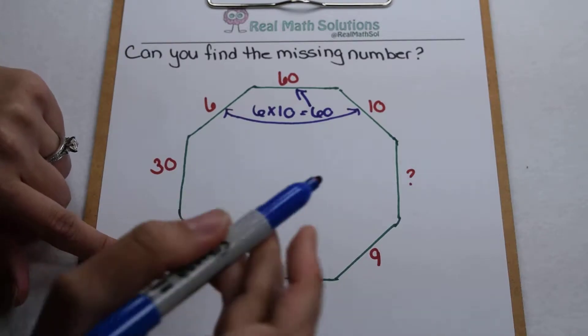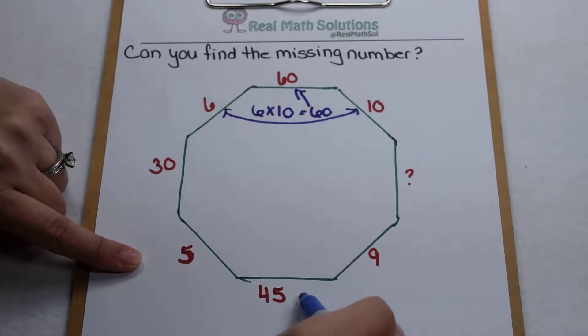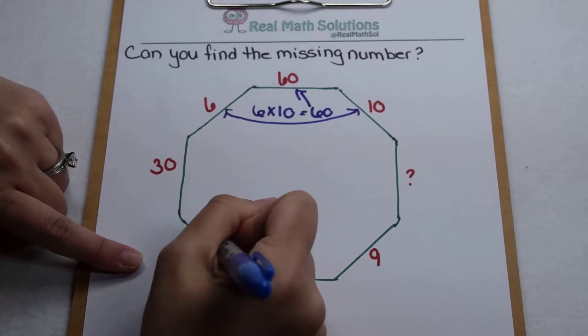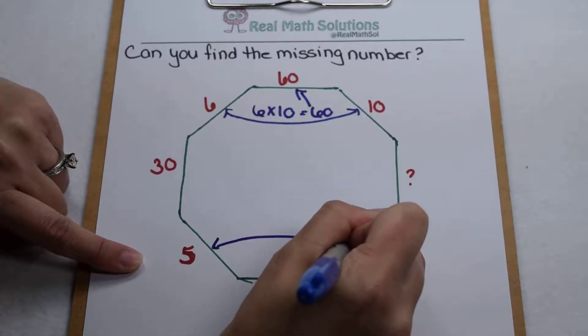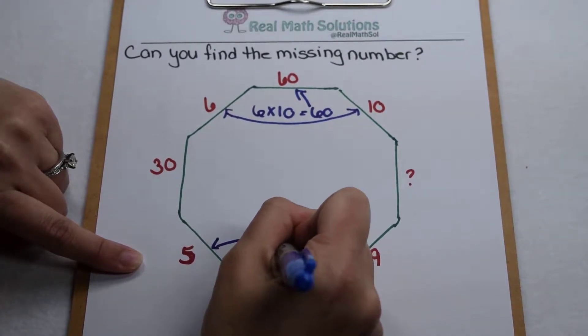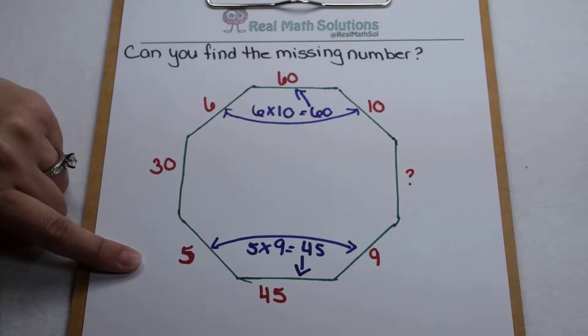If I come down here at the bottom, I can see something similar. 5 times 9 gives me 45. 45 divided by 9 gives me 5. So again, there's a relationship amongst these three numbers. If I look at them in another way, I could say 5 times 9 gives me 45, which is this value down here.